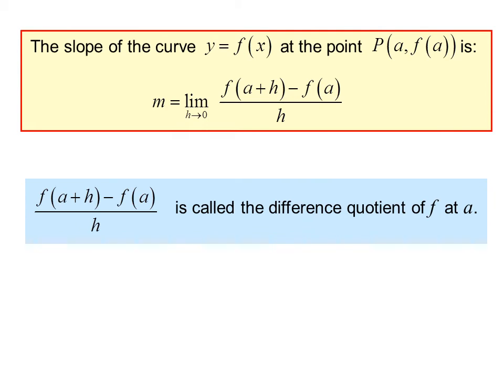The expression f(a plus h) minus f(a) over h is called the difference quotient of f at a. Mathematicians, not being very original, didn't give it a very original name. There's a subtraction, or a difference, and a division, or a quotient, hence the name difference quotient.